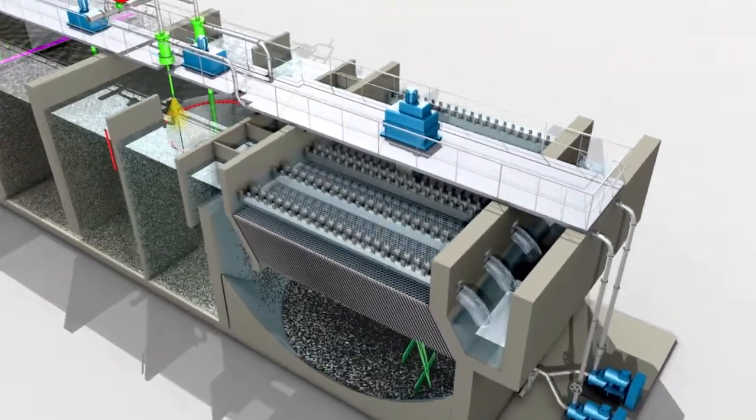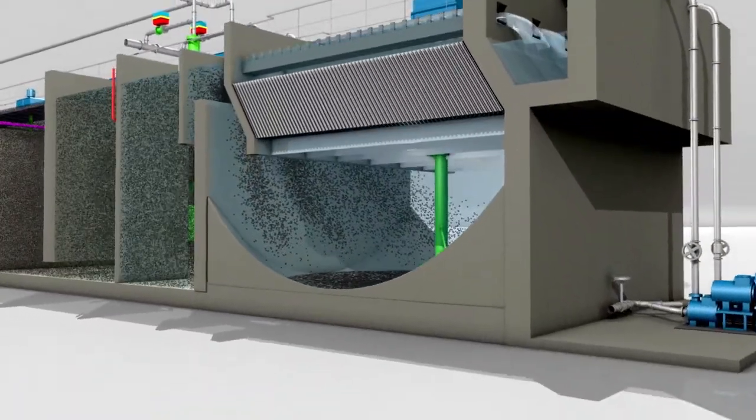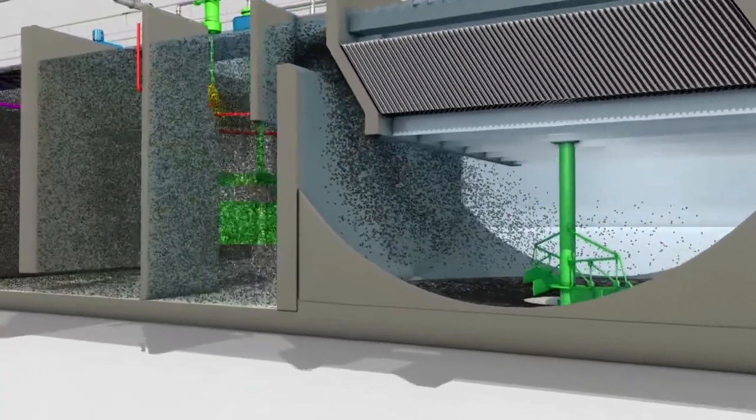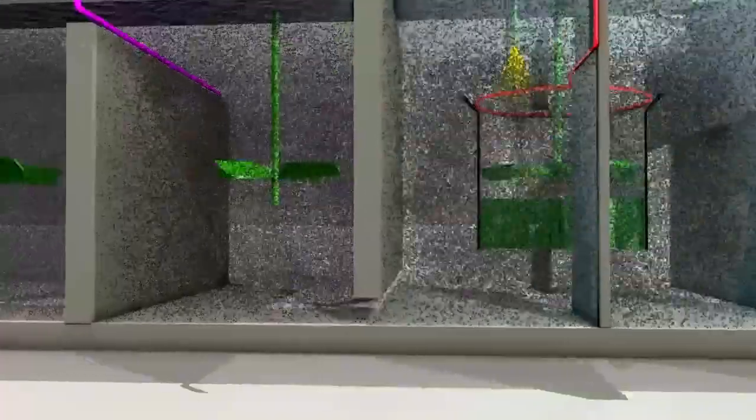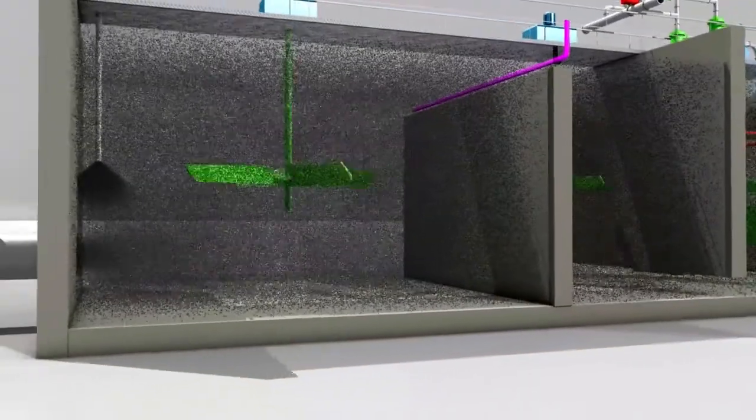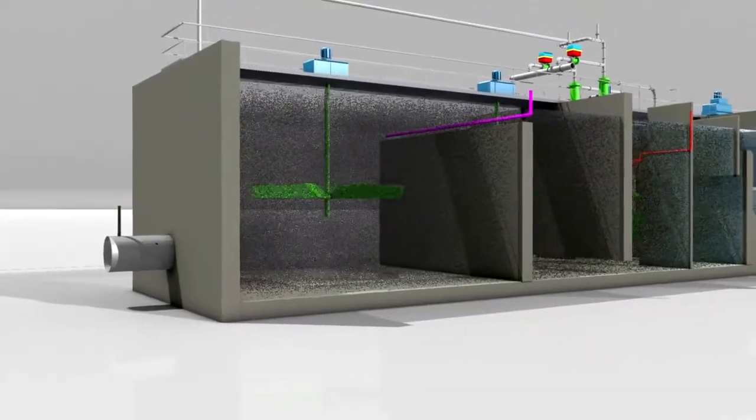The process is also well adapted to tertiary wastewater treatment applications, targeting removals of emerging pollutants, especially endocrine disruptors. Thanks to the optional use of ozone introduced into the contact tank, the process is capable of eliminating up to 95% of the endocrine disruptors and their ozonation by-products.